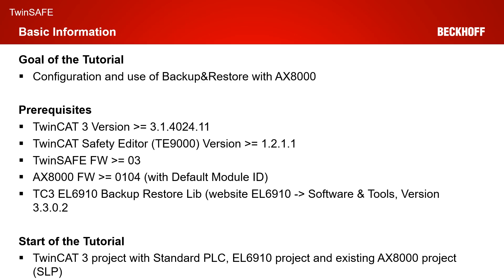As prerequisites, we need a TwinCAT 3 version greater or equal to 4024.11, a TE9000 version greater or equal to 1211. We need a TwinSafe firmware on the AX8000 greater or equal to 0.3. We need an AX8000 firmware greater or equal to 0.104 with the default module ID active. And for today's tutorial, we also need our TwinCAT 3 EL6910 backup restore library, which can be found on our website. At the EL6910, go to Software and Tools and you get the current version 3302.